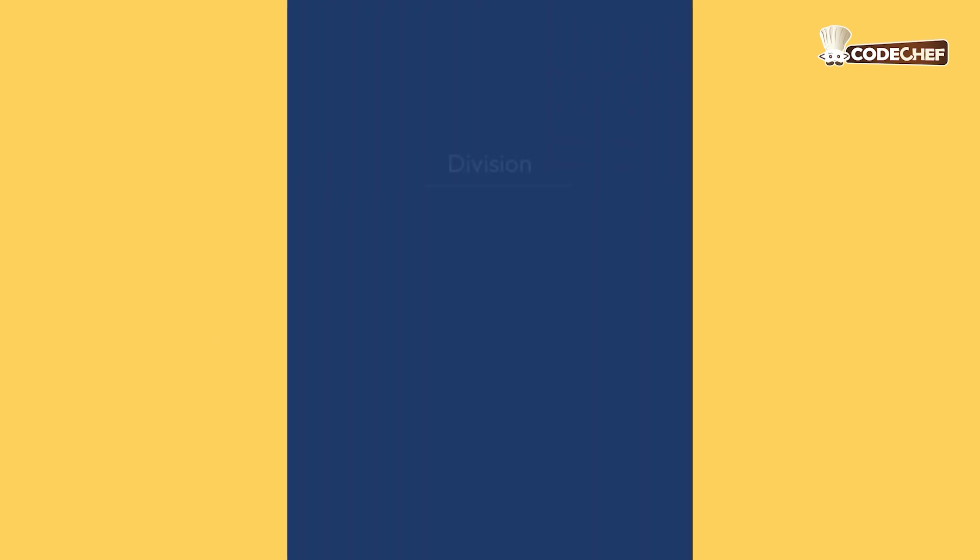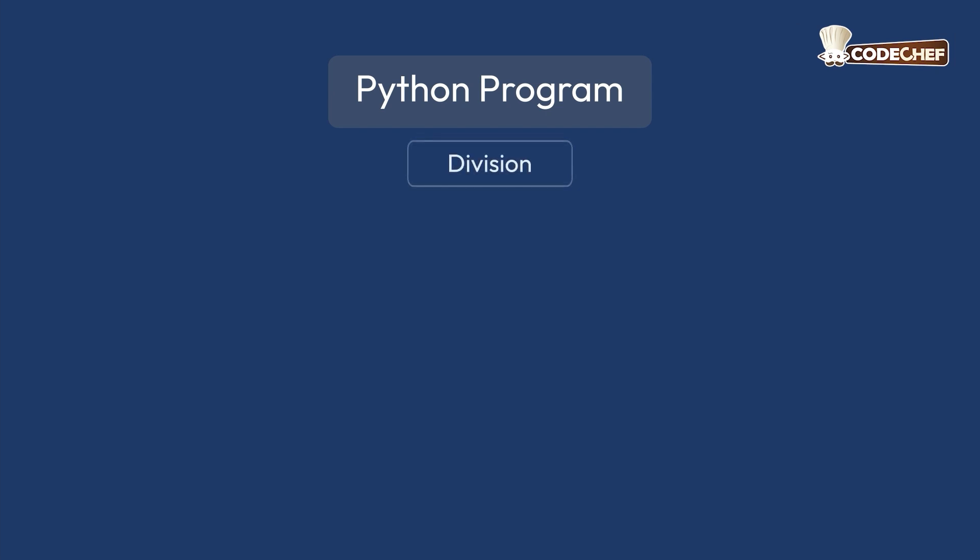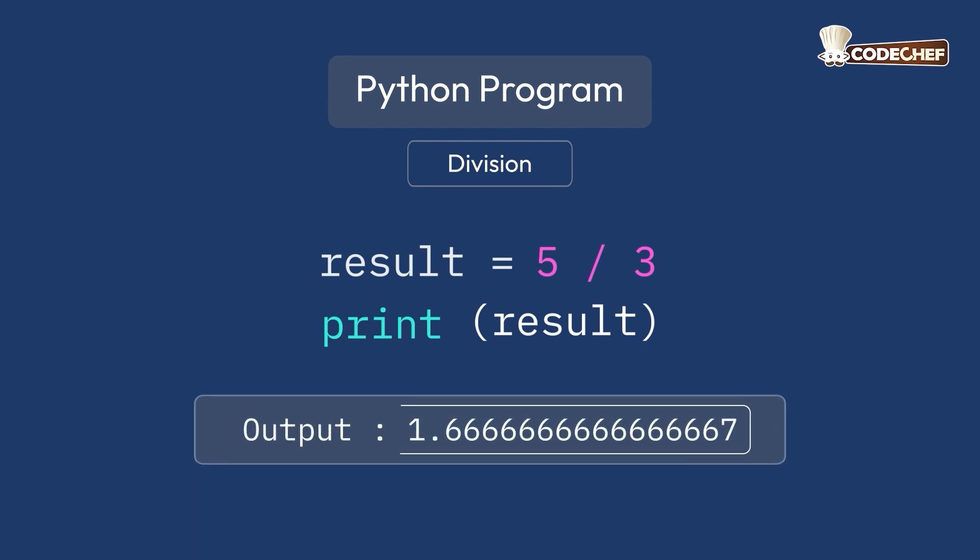Let's look at the division operator. This is an interesting one when it comes to code. You must have observed in our last example, when you divide 5 by 3 using the division operator, the output is a decimal number. That is a float data type.